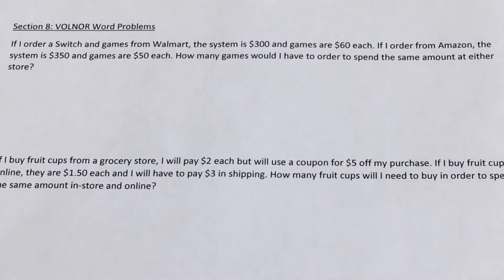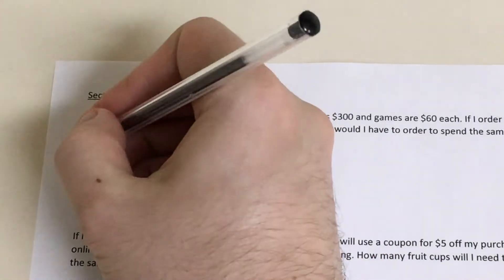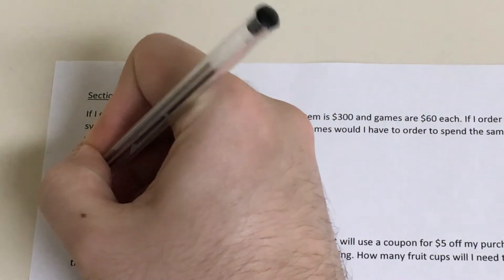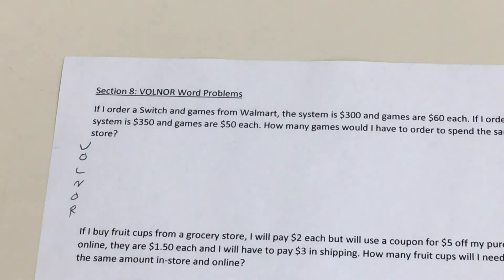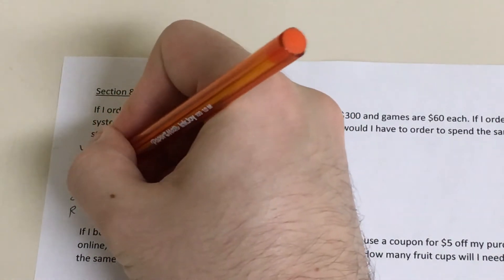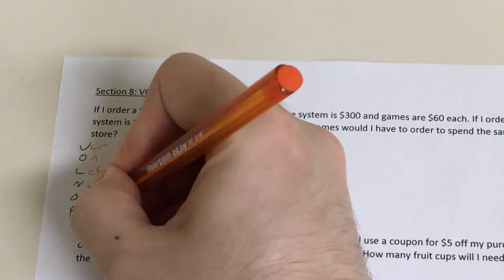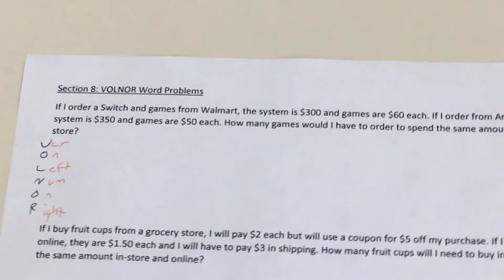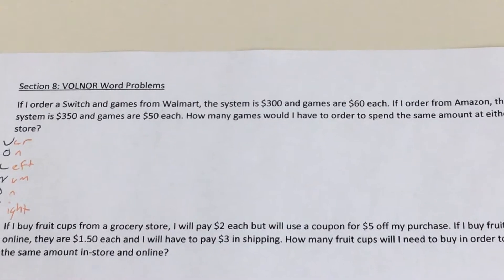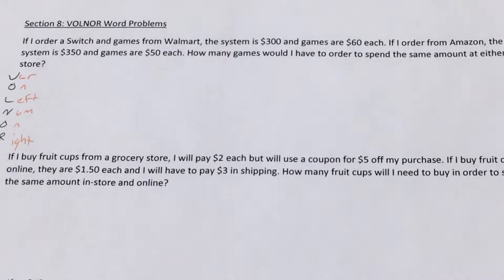So let's start with the VOLNAR word problems. And first, what does VOLNAR mean? Well, VOLNAR is a framework that I came up with for solving a certain type of equation where you have a variable on both sides. It stands for Variables On Left, Numbers On Right. And that's the general way you want to solve these. We'll end up using this when we actually deal with the particular word problems. So speaking of which, let's go ahead and start that.